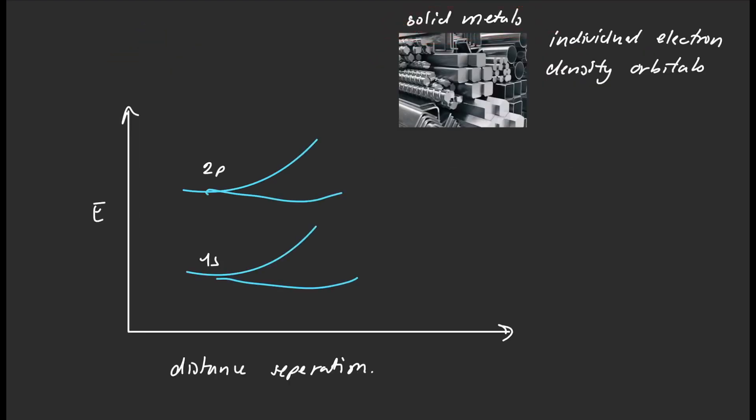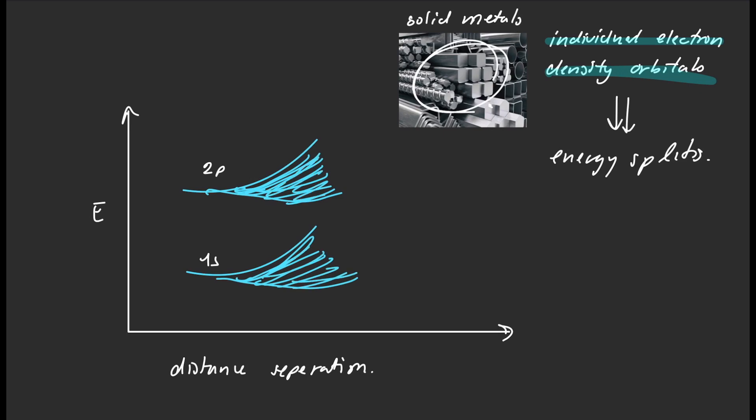In solid metals, many atoms combine their individual electron density orbitals to form many energy splits. Because we have so many atoms combined inside our metals, we have so many splits that take place. There are so many splits to the point that they basically form a continuous band. But there is a gap between the two bands, and we call this gap the continuous energy region.